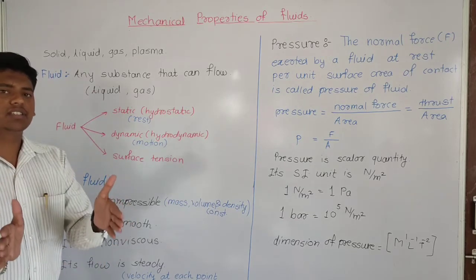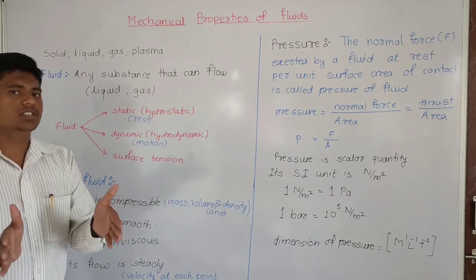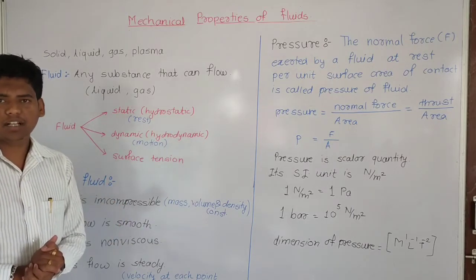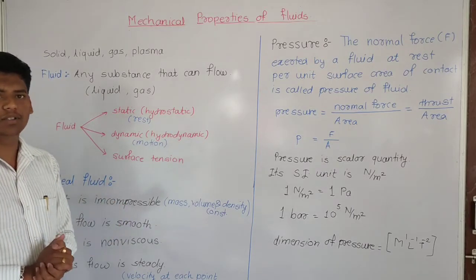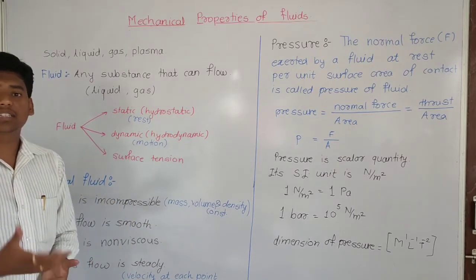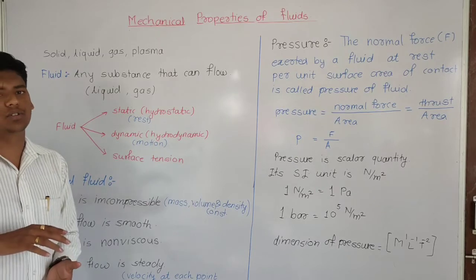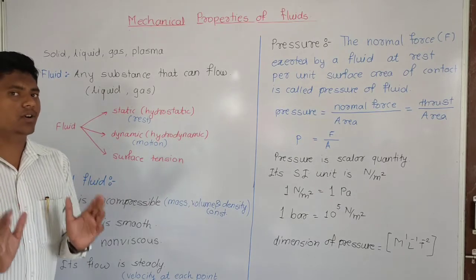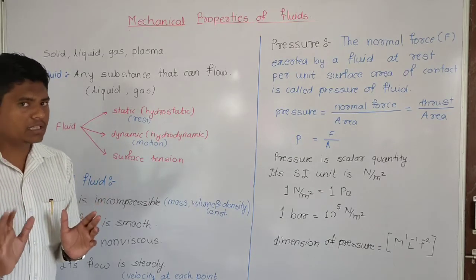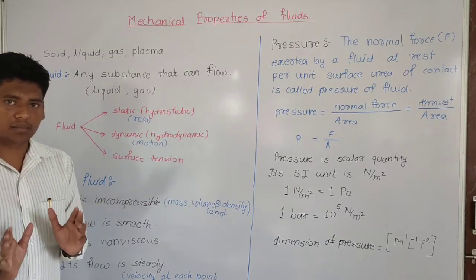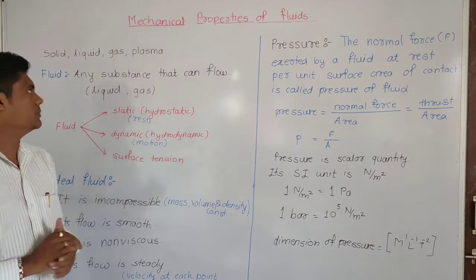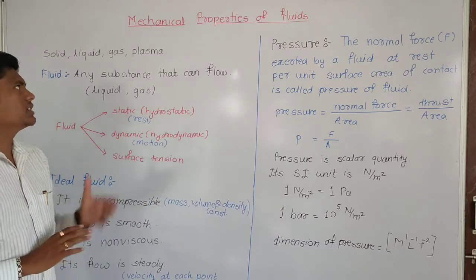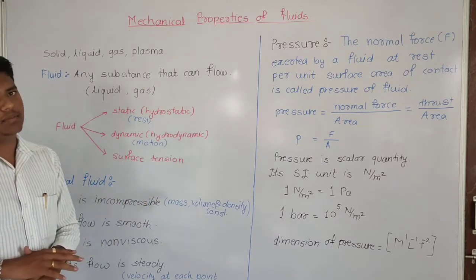If a solid has a fixed shape, the volume is also fixed. For liquid, the shape changes but the volume remains constant. Next we have Gas, and last we have Plasma.